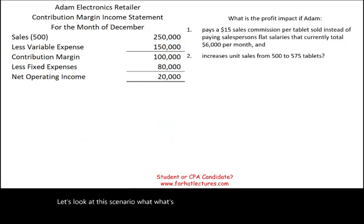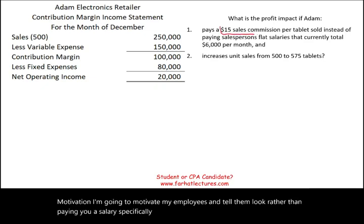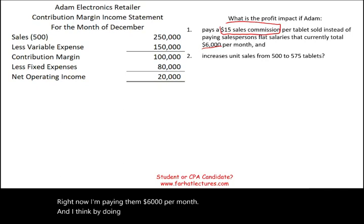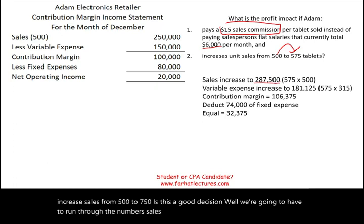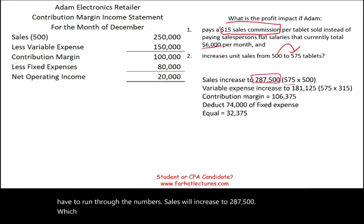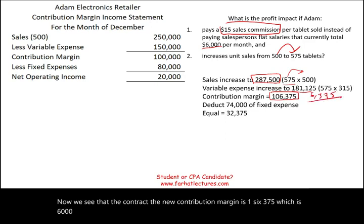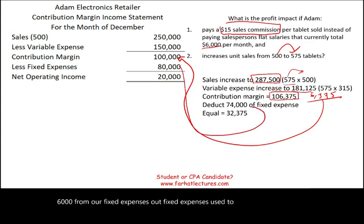What is the profit impact if Adam pays a 15% sales commission instead of a flat salary? Rather than paying salespeople a fixed $6,000 per month, Adam motivates them with commission per unit. As a result, sales are expected to increase from 500 to 750 units. Sales would increase to $287,500 (575 units × $500). Variable expenses increase to $181,125, giving a new contribution margin of $106,375 — which is $6,375 more than the current contribution margin. Fixed expenses decrease by $6,000 (removing the salary), so fixed costs drop from $80,000 to $74,000.